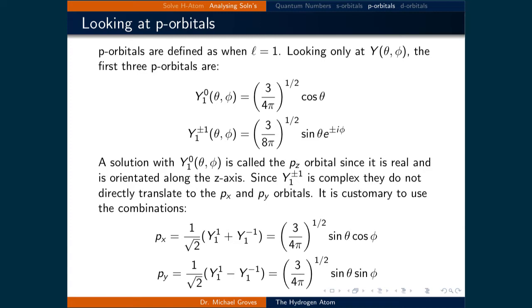Looking at the sine theta cos phi and sine theta sine phi results for p_x and p_y should make sense, as these were the same trig identities that converted x and y to spherical polar coordinates in the rotational spectroscopy lecture.